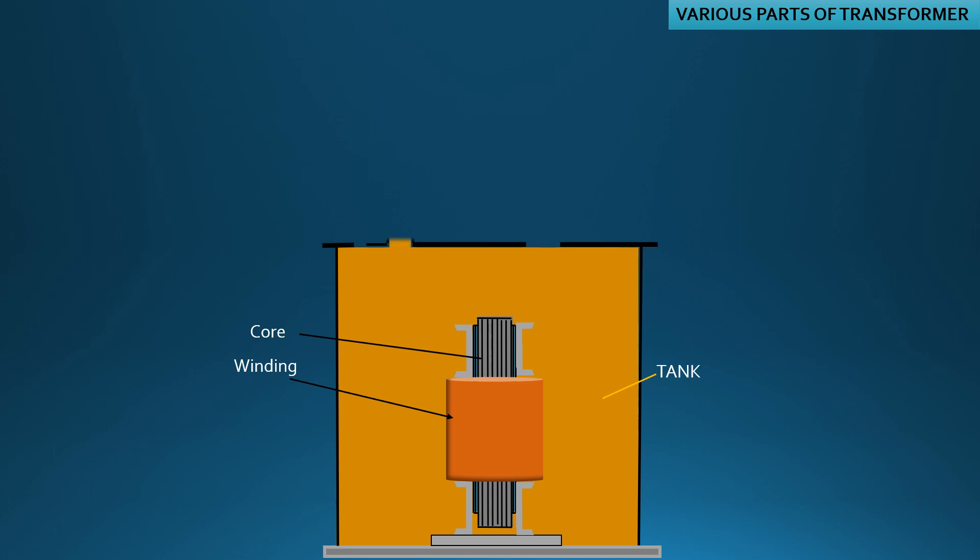Connection leads of the windings are brought outside by suitable bushings: the HV bushing and the LV bushing.